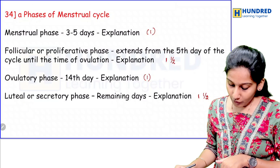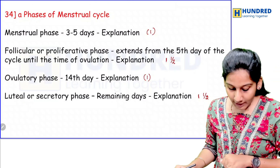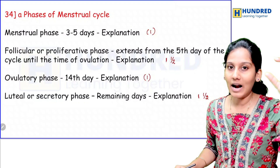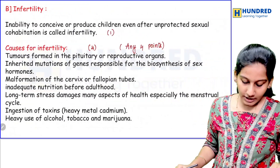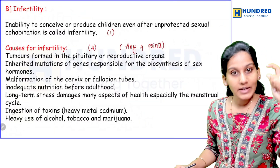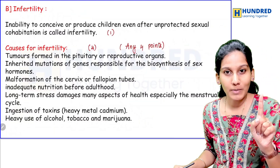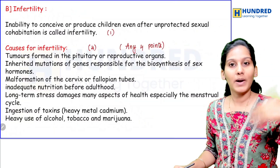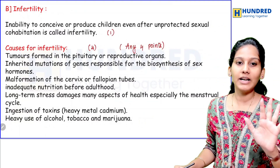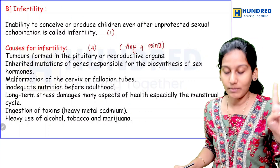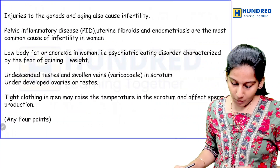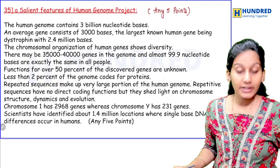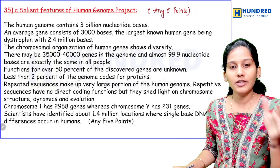The menstrual cycle: the follicular phase, the ovulatory phase, the luteal phase — each one and a half marks. And then infertility definition. Reminding points — at least 4 points. If you know 5 points, you will get 4 marks. That's it. For the human genome project, you have to know 5 features.